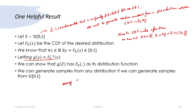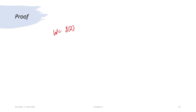Assuming g(y) is the inverse of F_X(x), or g(y) = F_X^{-1}(y), then if we define w = g(z), where z is uniform between 0 and 1.